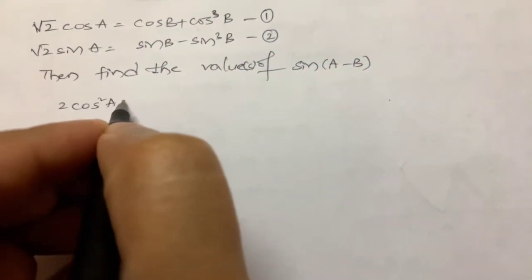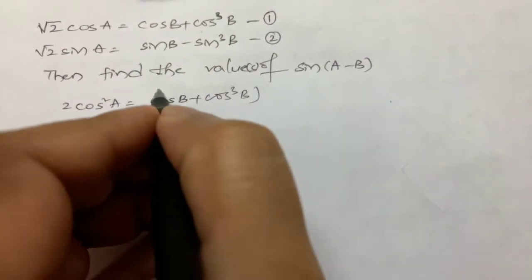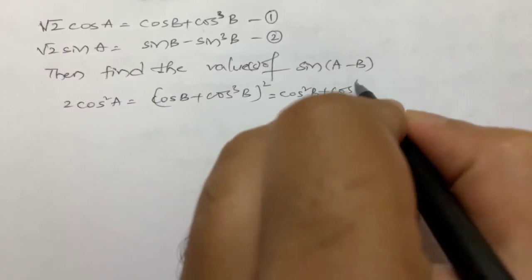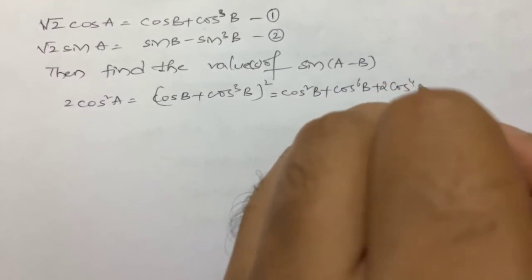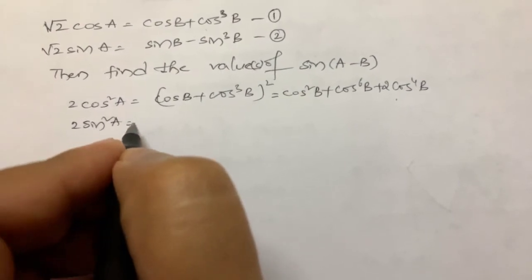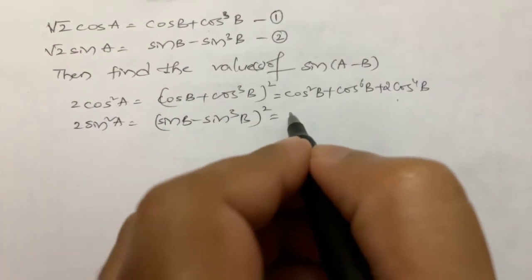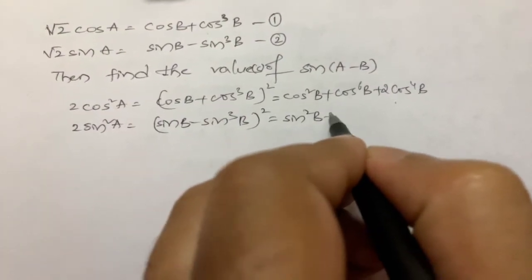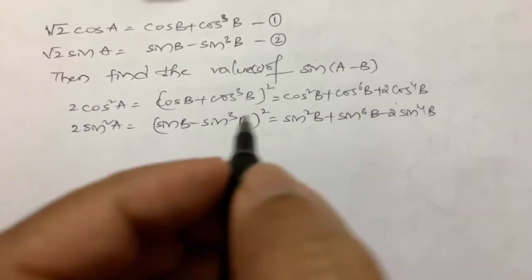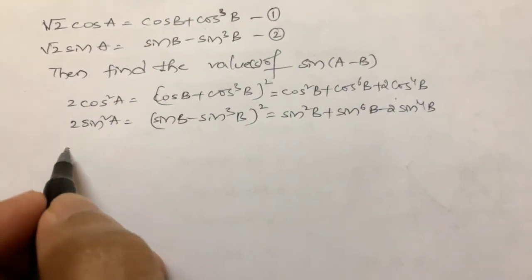Squaring equation 1: 2 cos² A = (cos B + cos³ B)² = cos² B + cos⁶ B + 2 cos⁴ B. Squaring equation 2: 2 sin² A = (sin B - sin³ B)² = sin² B + sin⁶ B - 2 sin⁴ B. After squaring, I will add both equations.